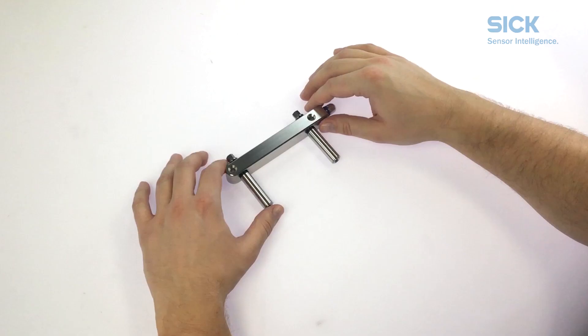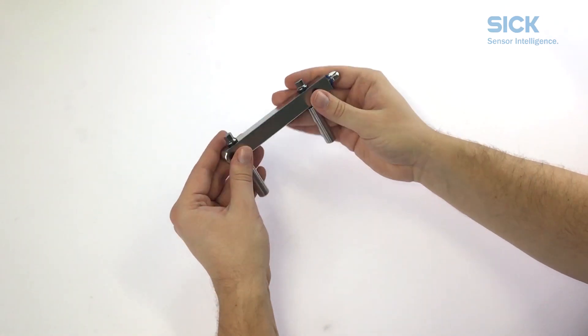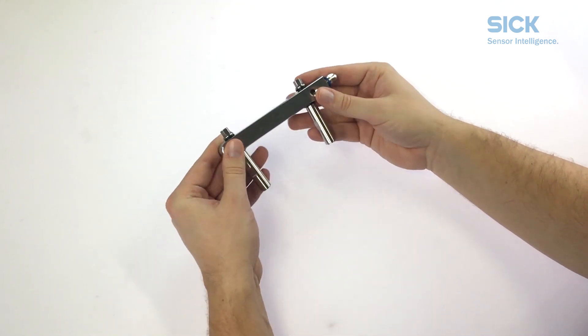When assembled, the mounting bracket looks like this. Note that for every Twinox 4 you need one mounting holder.